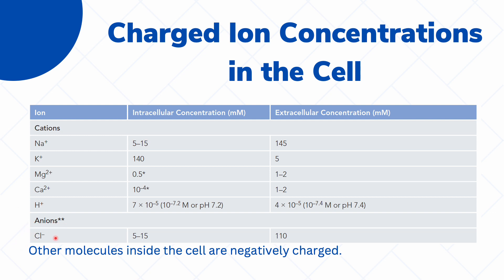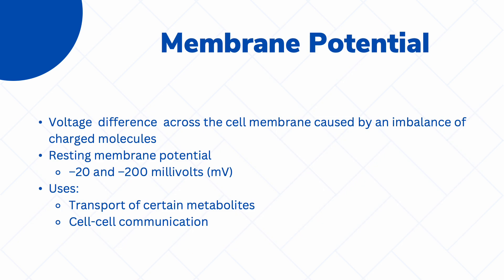Meanwhile, for anions or negatively charged ions, the major extracellular anion is chlorine. Inside the cell there are few chlorine ions, but most of the negative charges inside the cell are actually the different components of the cell, like your amino acids and your nucleic acids. Because of this differing concentration, our cell membrane has what we call membrane potential — the voltage difference across the cell membrane caused by an imbalance of charged molecules. The resting membrane potential of our cell is around negative 20 to negative 200 millivolts.